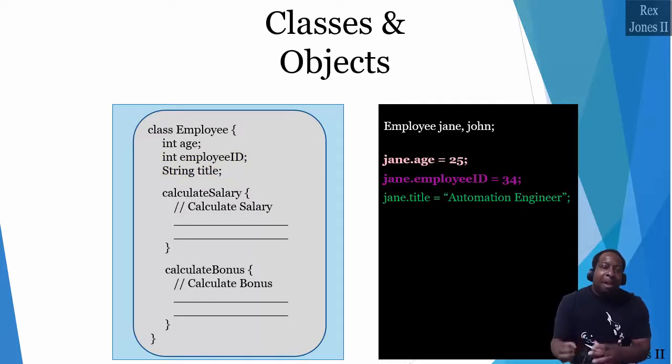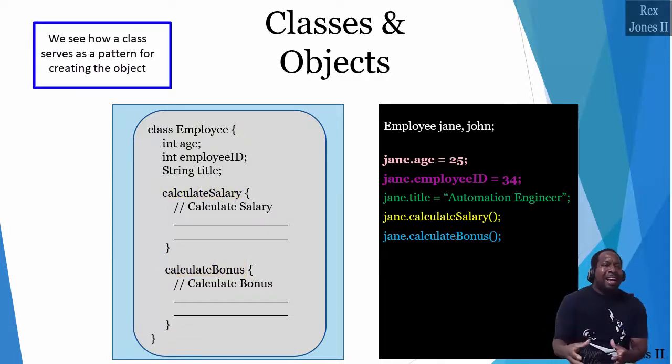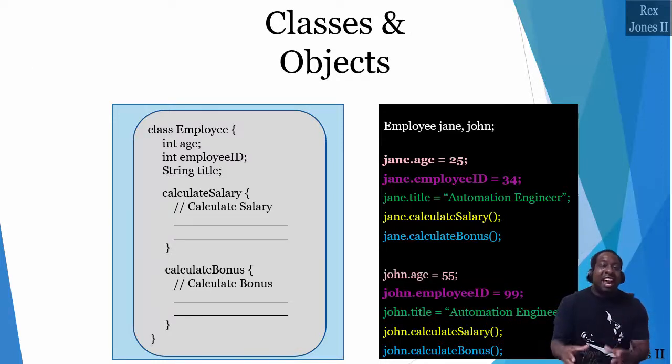The same goes for each method, calculate salary and calculate bonus. Jane has access to both methods, calculate salary and calculate bonus. We see how a class serves as a pattern for creating the object. In the same manner, our object John has access to the same data and methods.